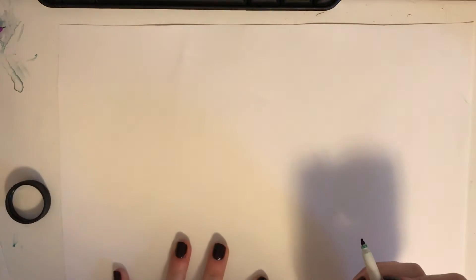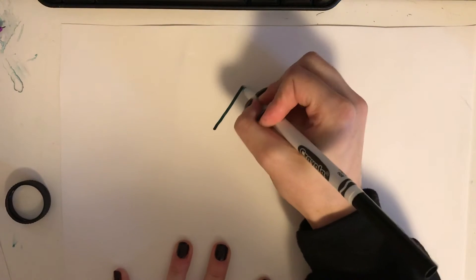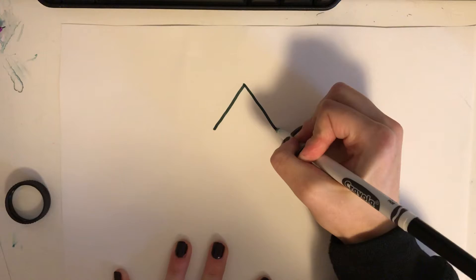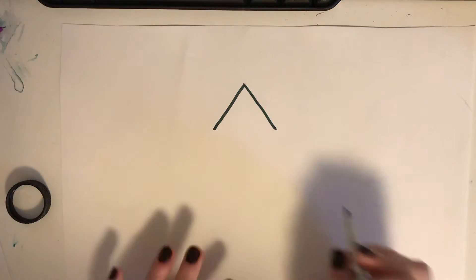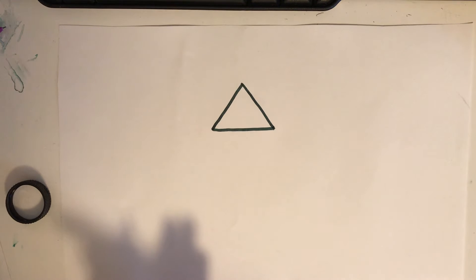Today we're going to draw different kinds of shapes, and we're going to start with a shape like this. This shape starts like you're writing a capital letter A. Then we have to close the bottom, and what shape is that? Yes, it's a triangle.